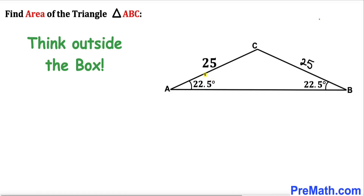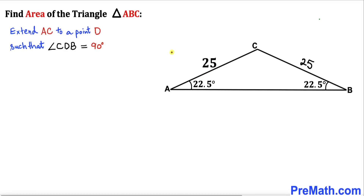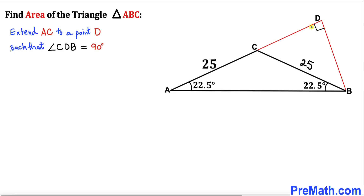Now we are going to think outside the box in order to find the area of this triangle, so we are going to create some auxiliary lines. We will extend side length AC all the way to some point D such that angle CDB is 90 degrees.